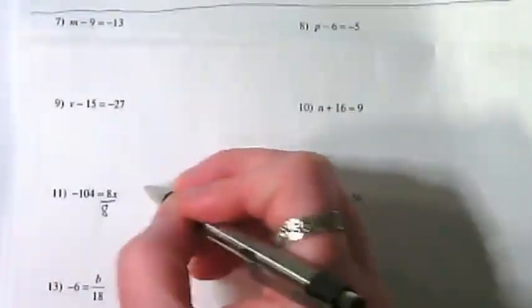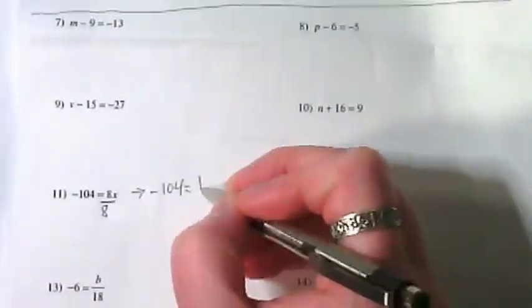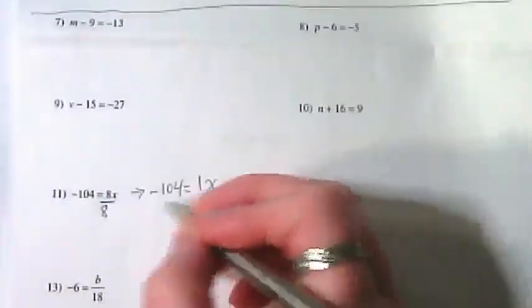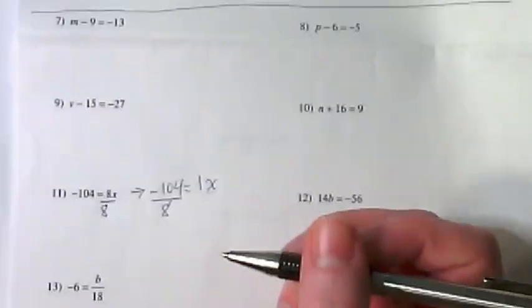So once I do that, my equation then is negative 104 is equal to an invisible one x. But to get this one, I divided this side by eight, so I have to divide both sides by eight.